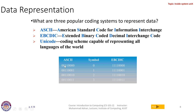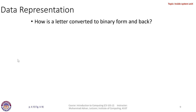For example, in ASCII, the pattern 00110000 represents zero, while in EBCDIC it is represented as 11100000. These different patterns represent the digits zero, one, two, and three. Remember that these are the three popular coding systems used to represent data inside a computer system.